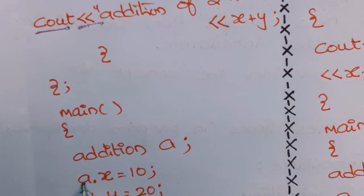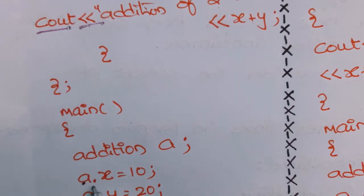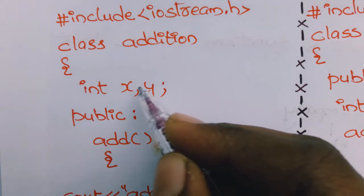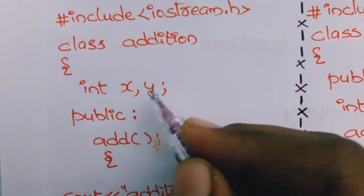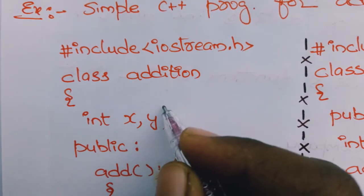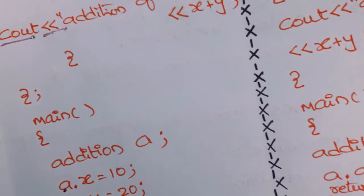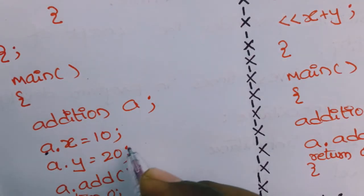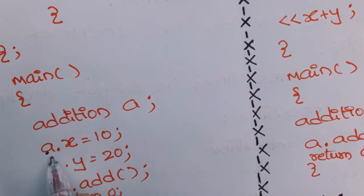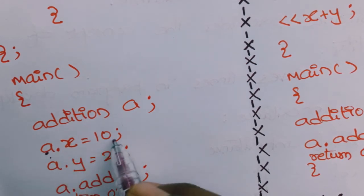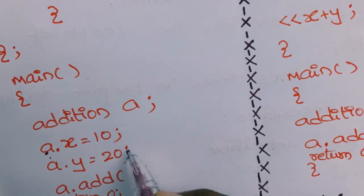Using the object name you can access the class variables and class methods with the dot operator: object_name.member_name. Since I did not declare values inside the class, I assign them using the object: a.x = 10 and a.y = 20. The syntax is: object_name.variable_name = value.